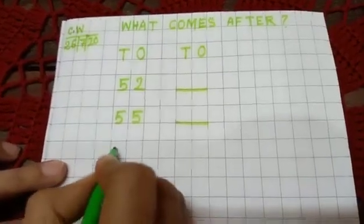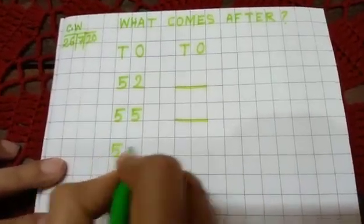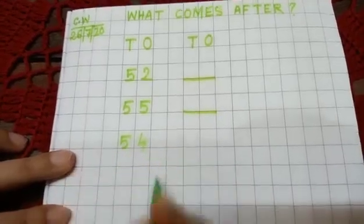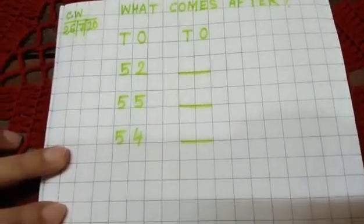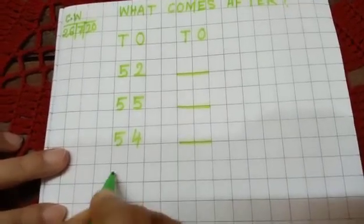Now next one. Five, four—fifty-four. Fifty-four dash. Next one is?